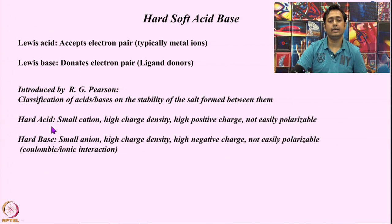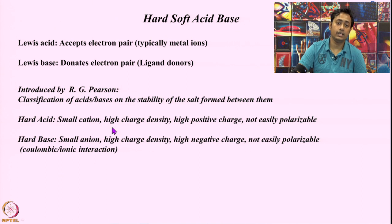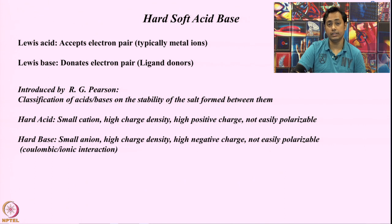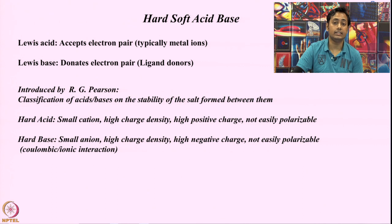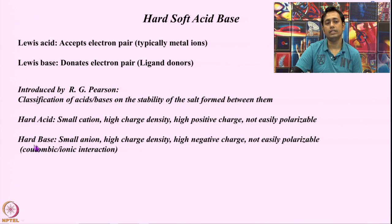A hard acid is a small cation with very high charge density, generally combined with a high positive charge, and they are generally weakly polarizable. Connecting this to polarizability: if you have very small electron density around the system with a very high charge, your charge density is very high, making it very difficult to polarize. This less-polarizable system is known as a hard acid.